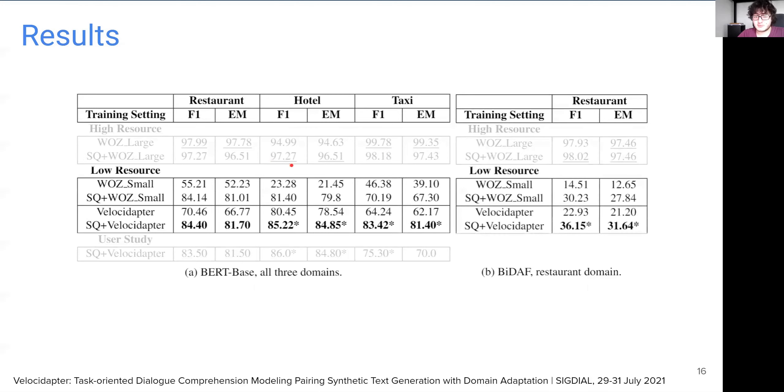We repeat the restaurant domain experiments with BiDAF model. It, as expected, performs poorly compared to BERT base, which is parallel to the results in the SQuAD leaderboard. But our framework is still able to boost the performance by a significant margin, showing that it works in a model agnostic manner.